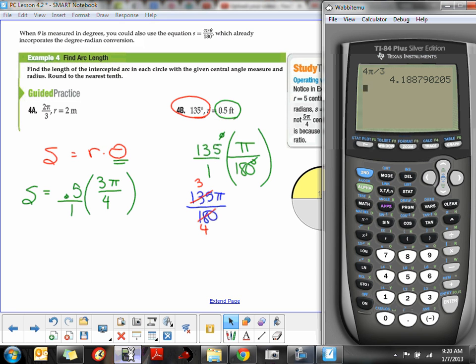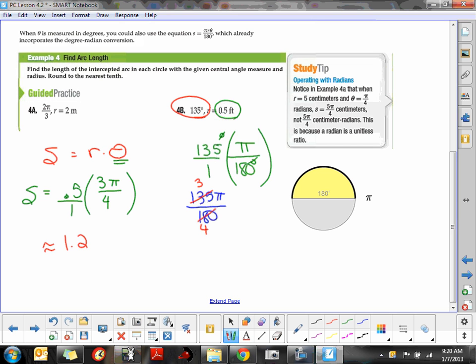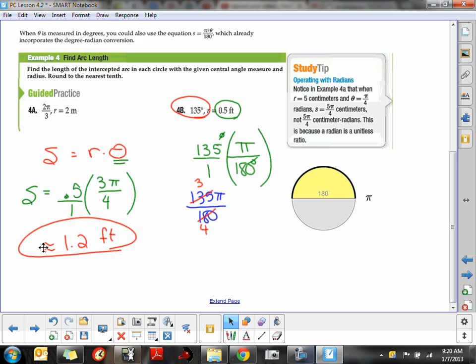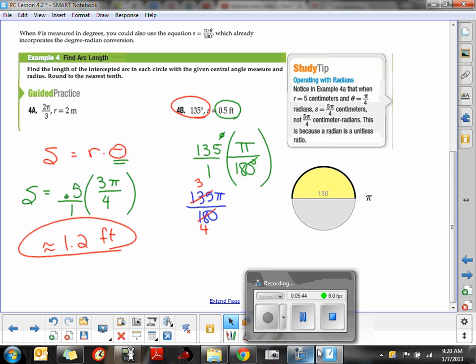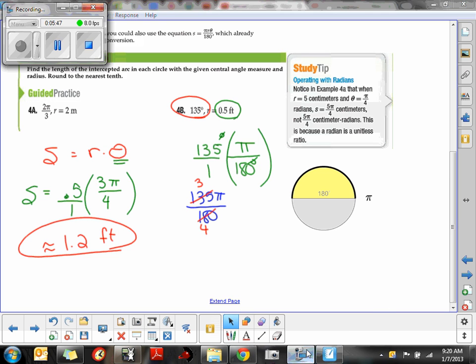So we've got a half. We've got that times 3. We've got that times π. You want to use that exact value of π in your calculator. You want to divide that by 4. So round it to the nearest tenth, we should have about a 1.2 foot arc length. So 1.2 feet. So nothing too dramatic there. It's probably going to spend more time doing your unit conversions on your angle measurements than anything.